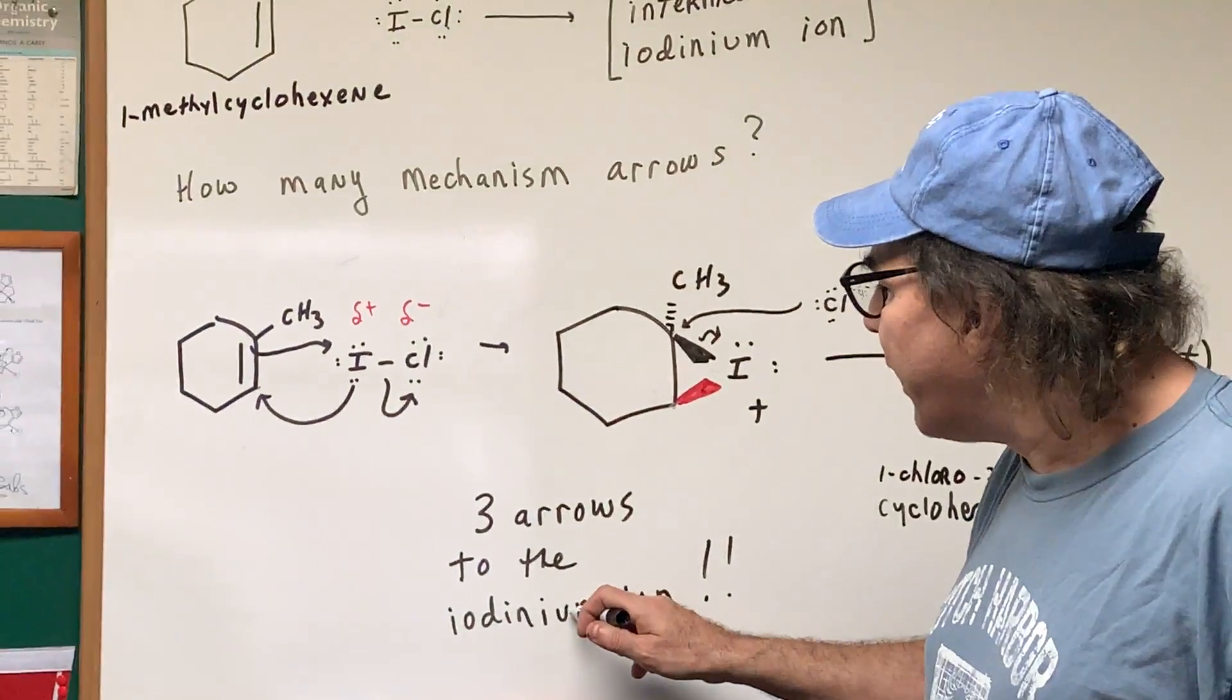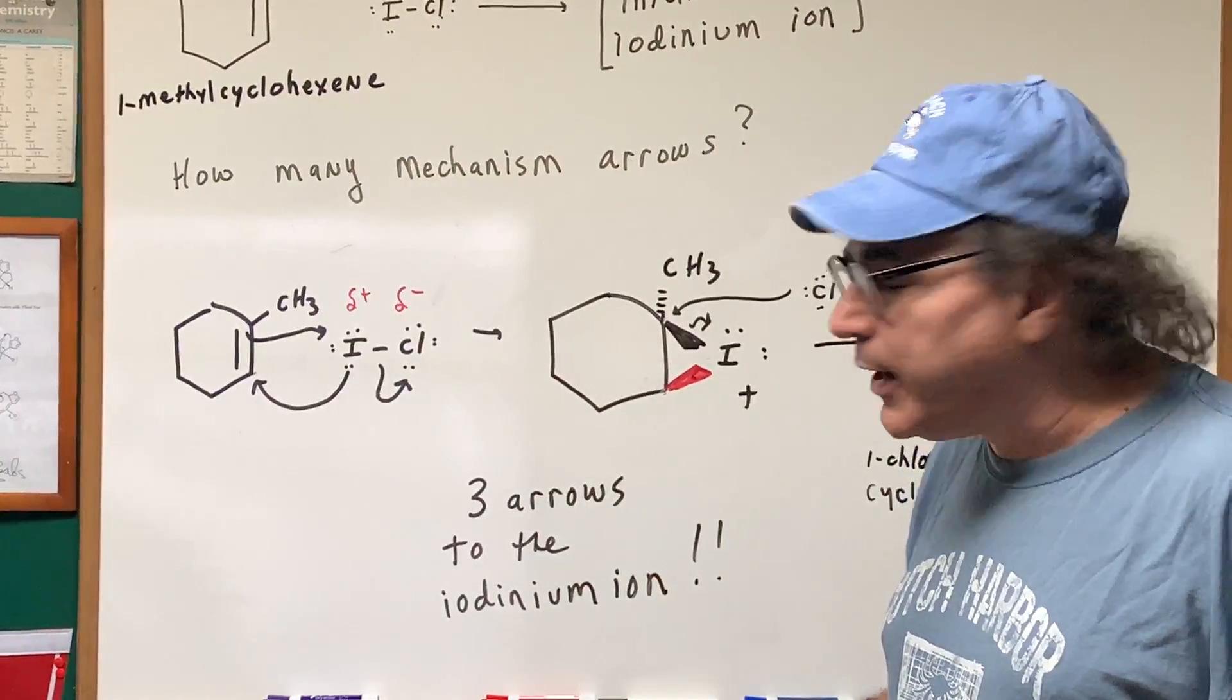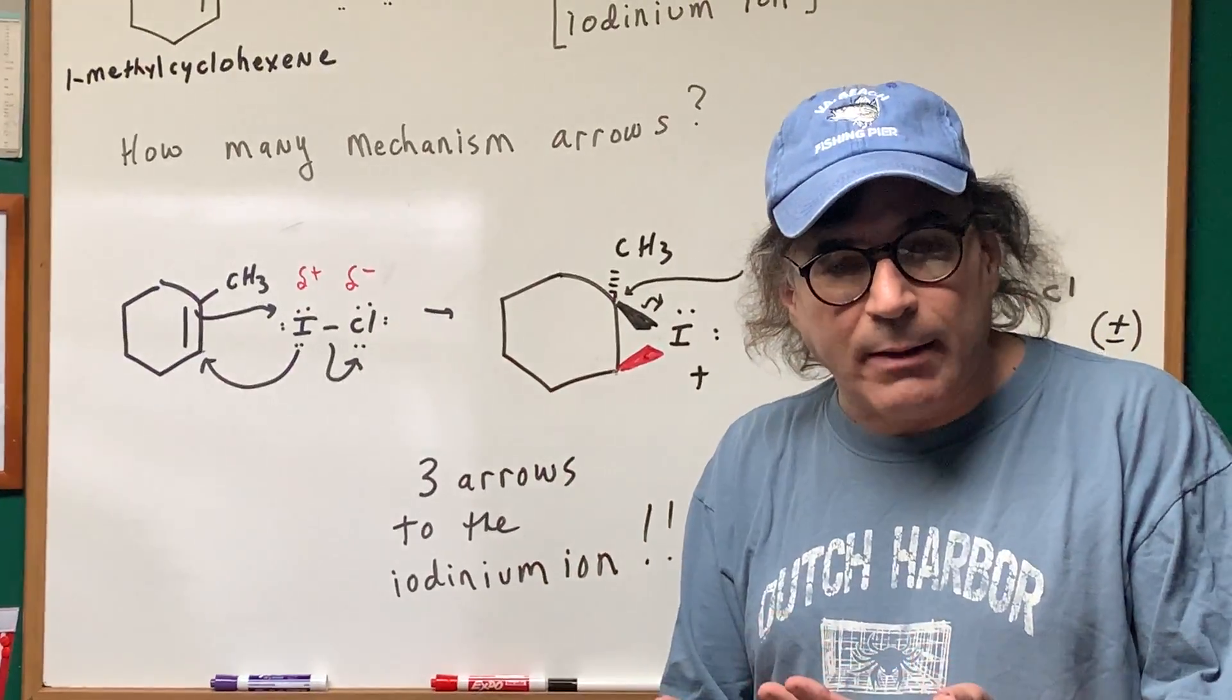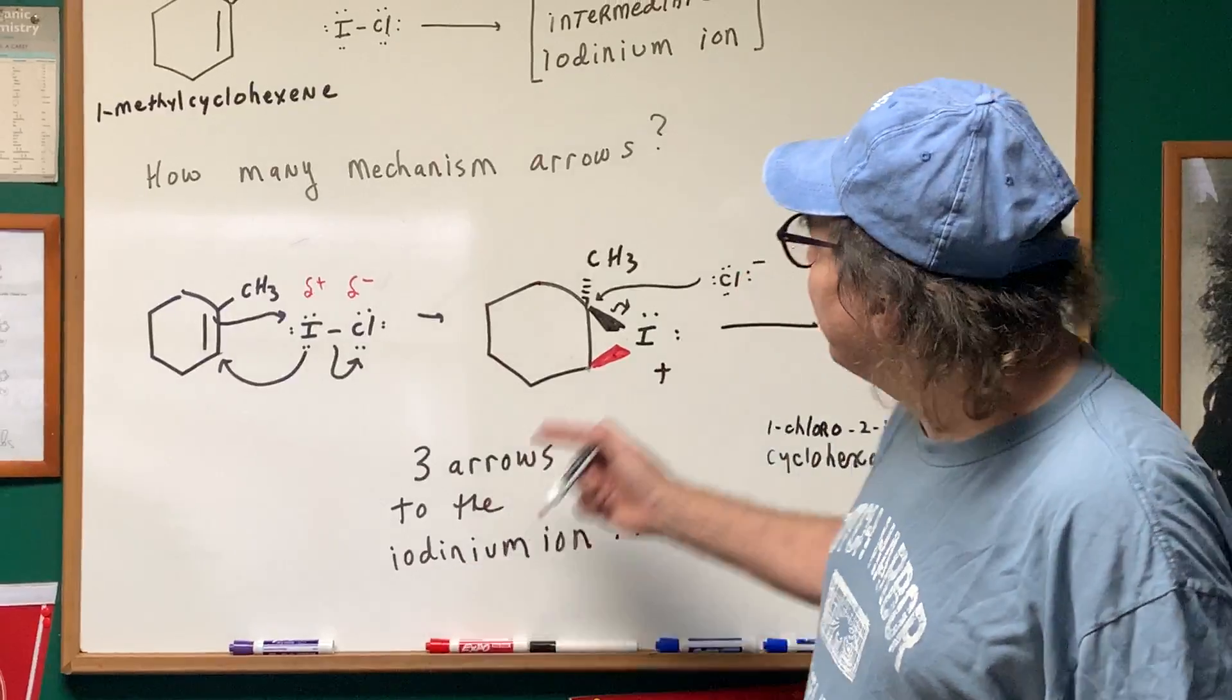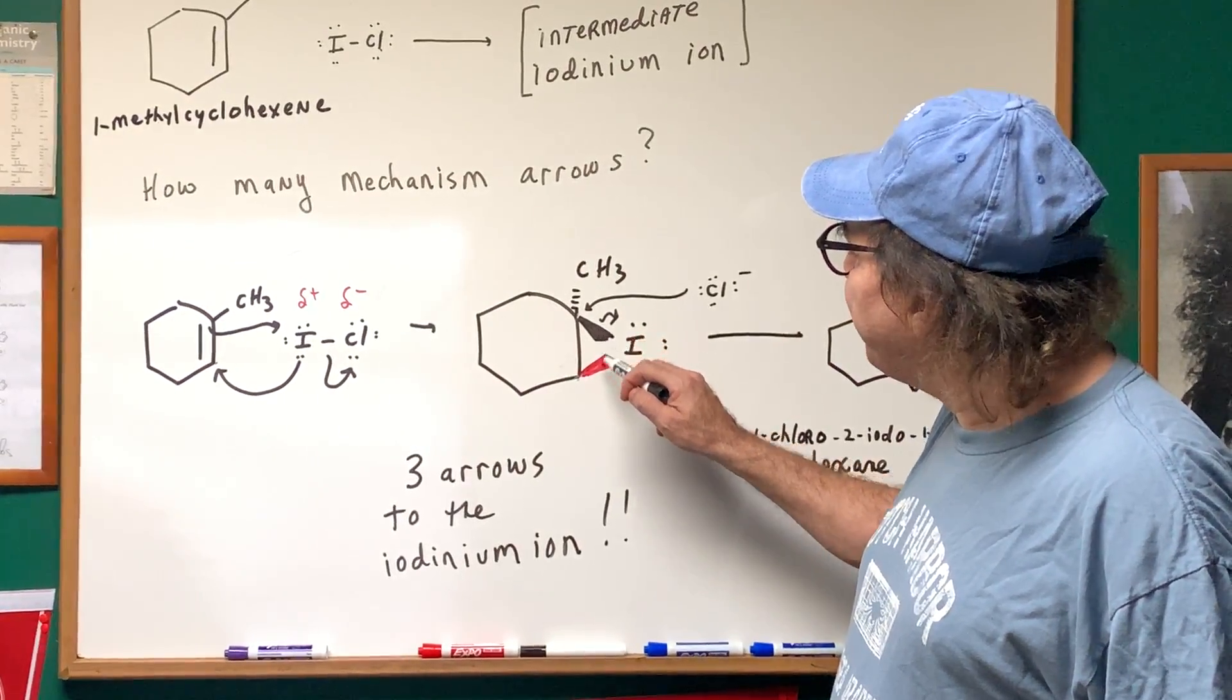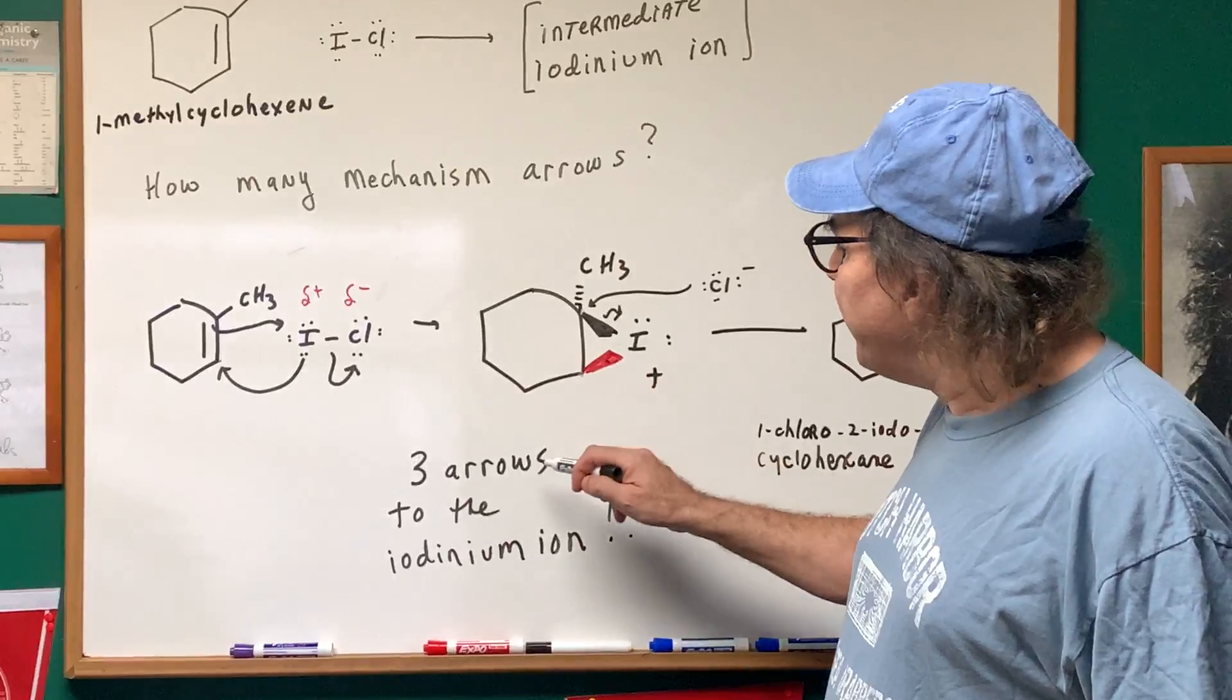So as you can see, it took me three arrows to get to the iodinium ion. Notice that the iodine can either come in from the bottom face or the top face. Let's pick one. Let's pick the top face. So as you can see, I'm going to put both of these as wedges. So there's three arrows.